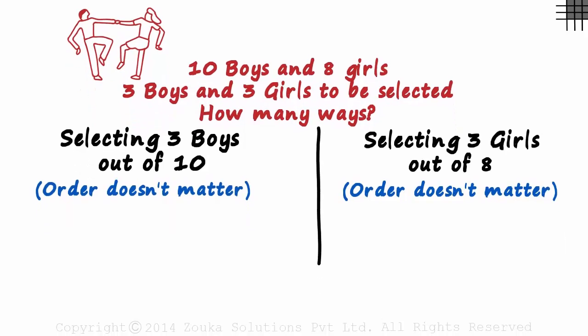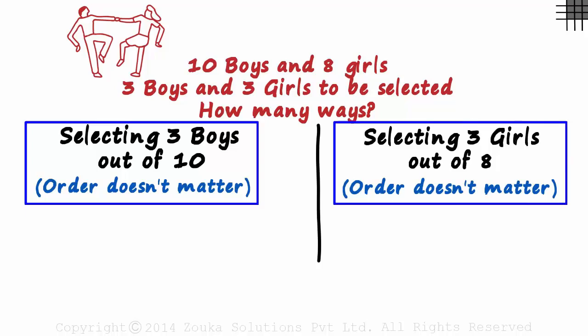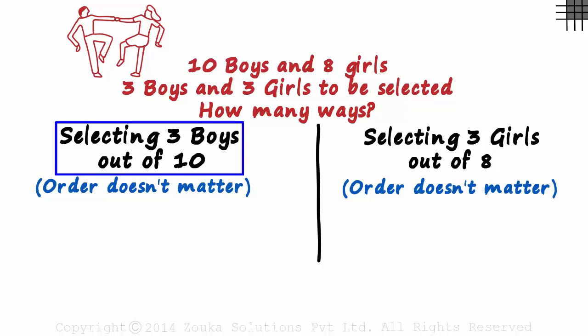How do we solve this problem? We haven't seen the P and C formula yet. How do we solve this problem based on logic? Okay, how about we solve this case first, then this one? And then we will see what to do. So selection of 3 boys out of 10.